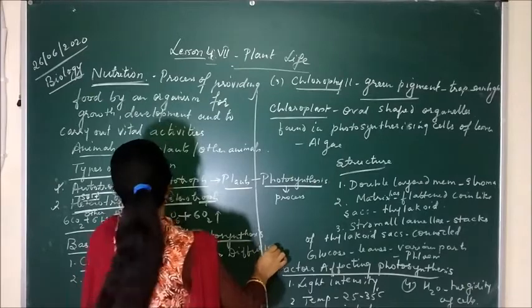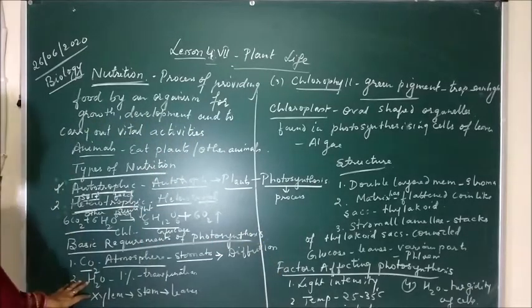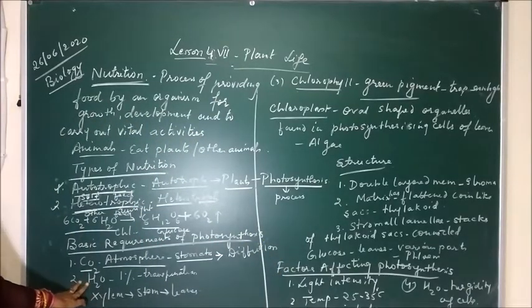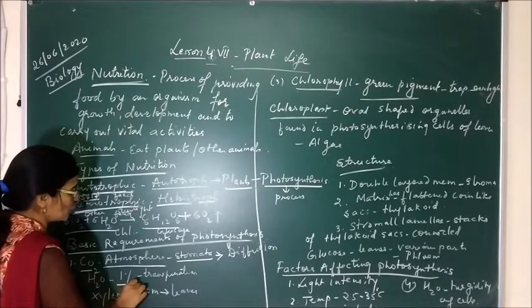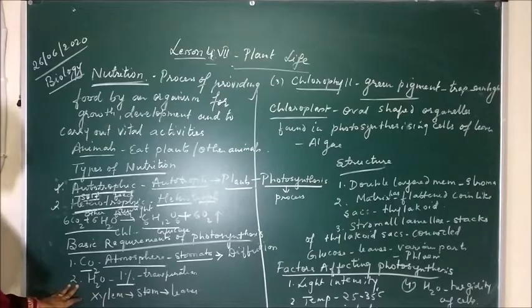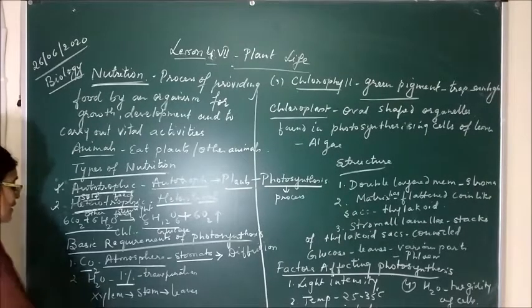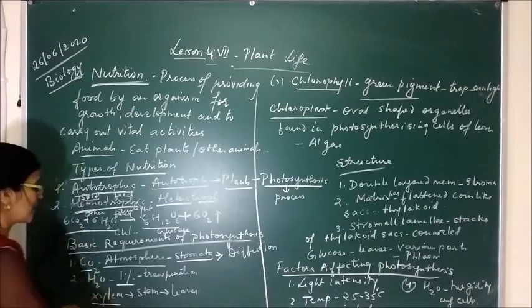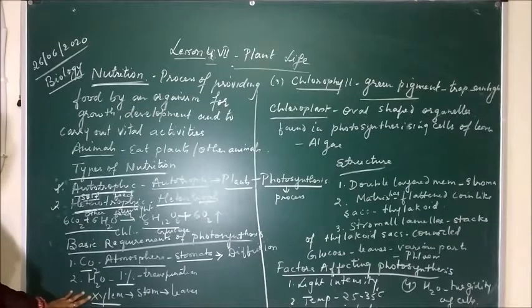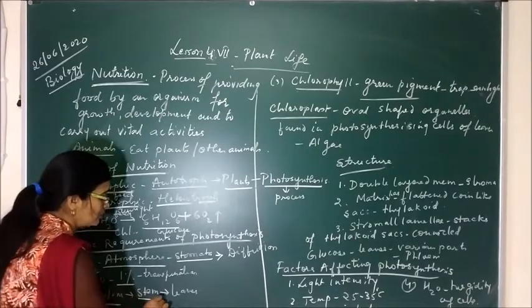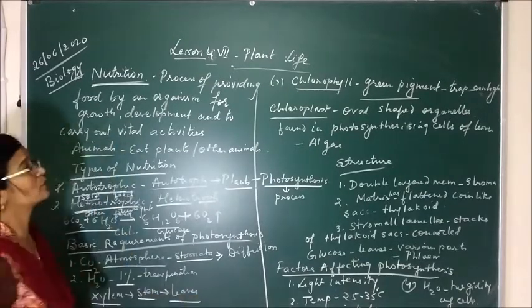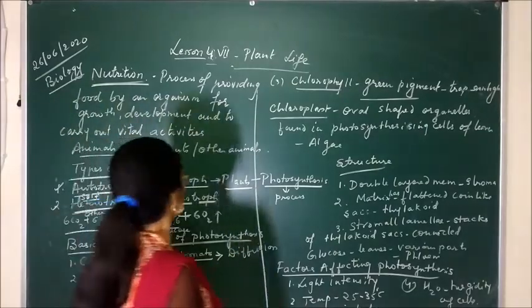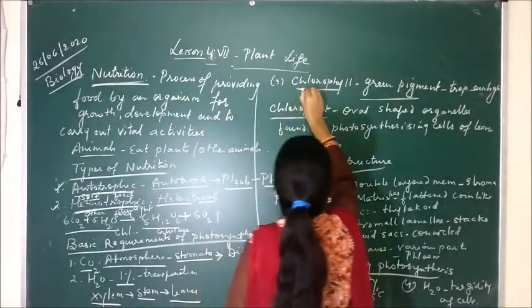The second requirement is water. Water is absorbed by the roots of the plant — about 1% of the total water absorbed is used by the plant. This water is transported through the xylem, which is a conducting tissue present in the roots. From the roots, xylem conducts water to the stem, and from the stem it is conducted to the leaves.